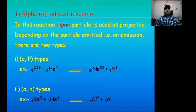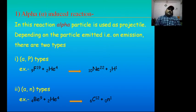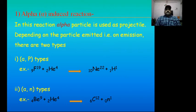In the first case, alpha-proton type: proton acts as the ejectile emission. Example: Fluorine-19 plus alpha particle gives Neon-22 and a proton as ejectile. That is why this type is known as alpha-proton type induced reaction.